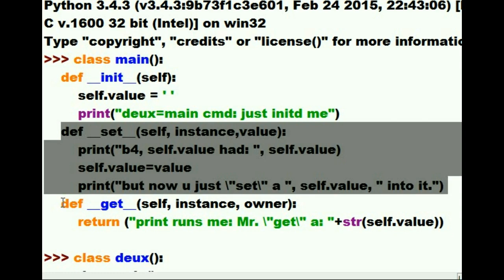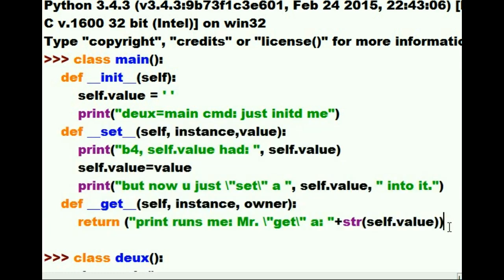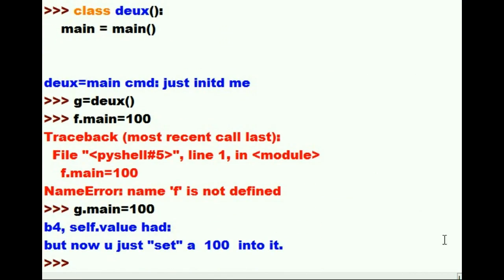Hmm. I wonder what will trigger the execution of the double underscore get method. Let's go and experiment. Scooch on down here.